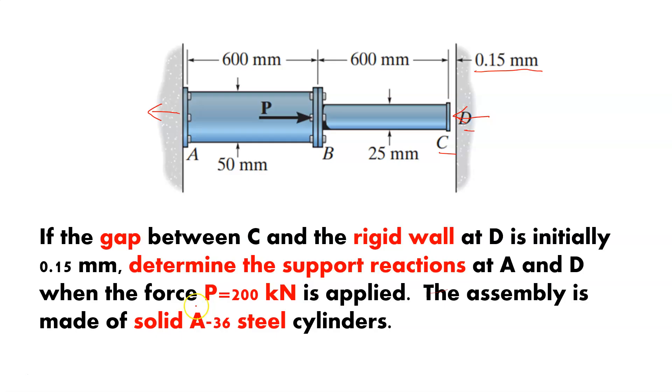When the force P is equal to 200, so we have a value of 200 on this force, this applied load, that's touching this joint at B.